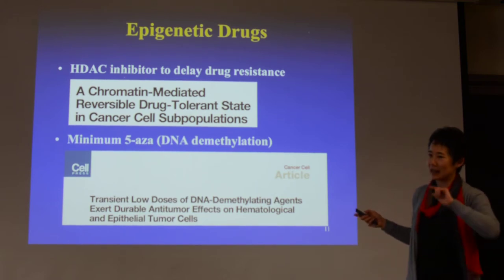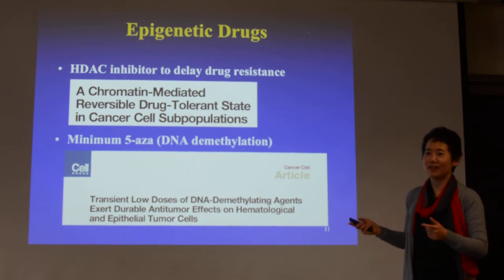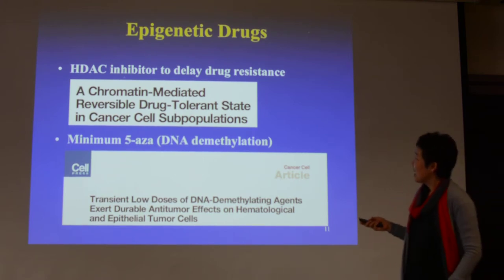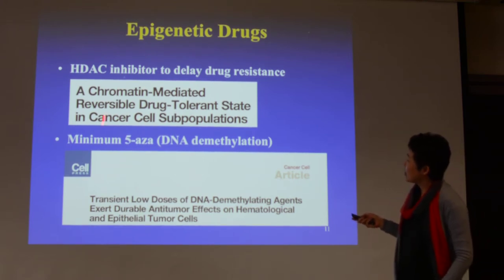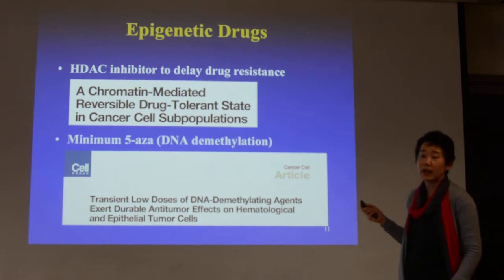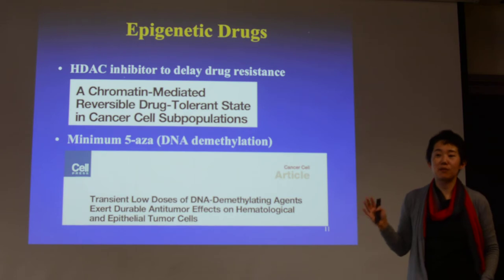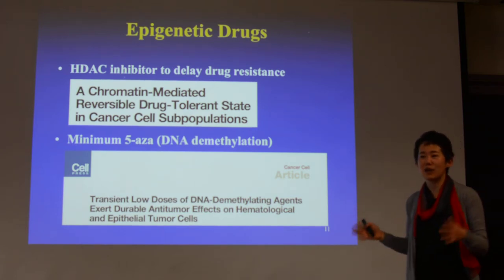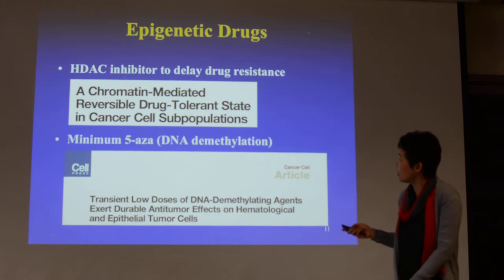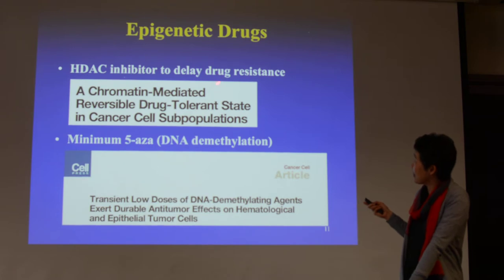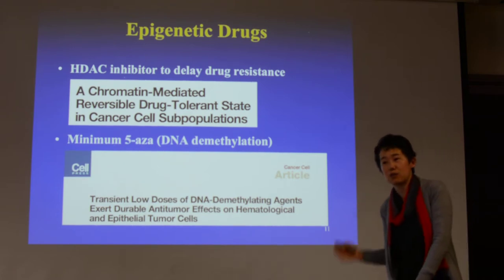When you have inhibitors — a double negative — it actually activates gene expression. HDAC inhibitors have been approved for treatment a long time ago. Before people even understood exactly what HDACs were doing, it was tried. Interestingly, when they used the inhibitor, they saw that it can delay the development of drug resistance.